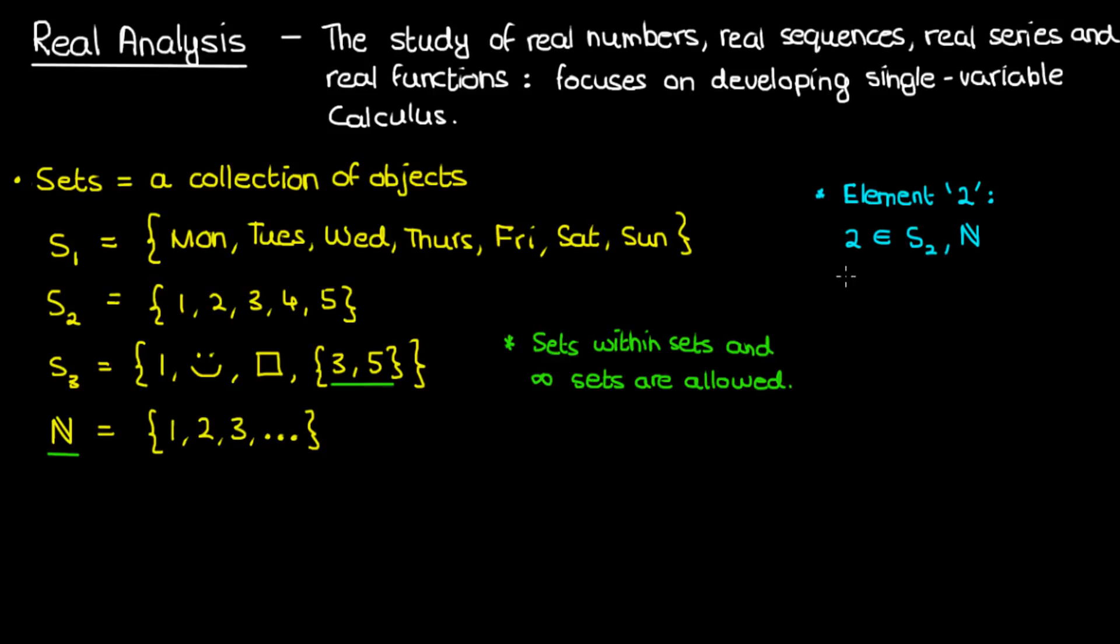I can also say that 2 is not found in the sets S1 and S3, or that 2 does not belong to S1 and S3. This is denoted by the belongs to symbol but with a line running across it. And in general if an element X is found in a set S we write X belongs to S, and if it's not found in the set S we write X does not belong to the set S.